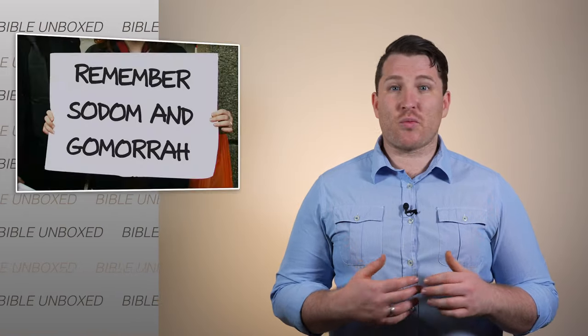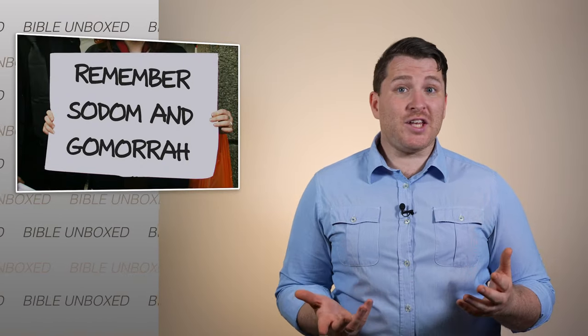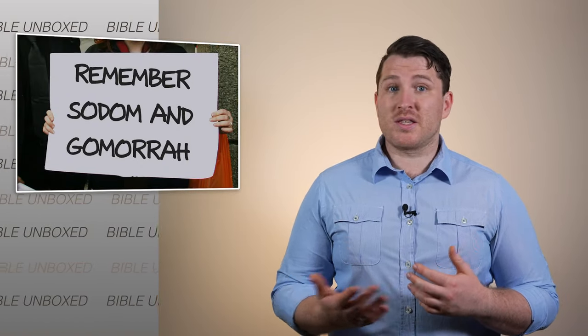Now this passage sometimes gets brought up in discussions around human sexuality. In its ancient context, the wickedness that is in view is the mob's intention to forcefully abuse the strangers under Lot's protection, and their apparent xenophobia. Their sexuality is not part of the discussion. Their intentions were wicked and to be condemned regardless of whether it was with the foreign men or Lot's daughters.